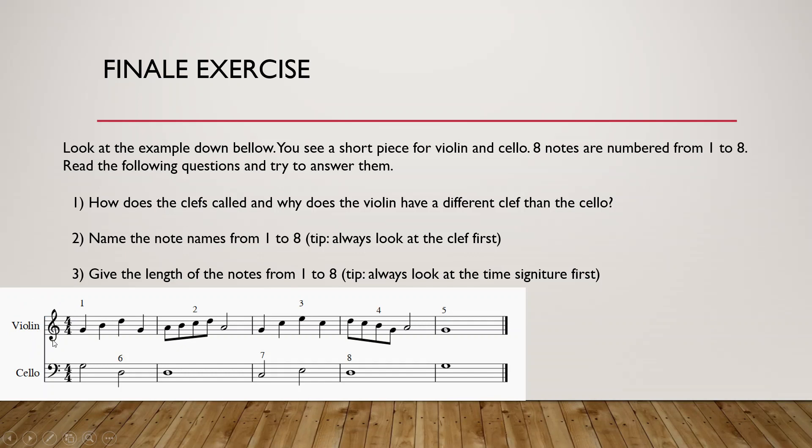So first, the clefs. The violin has a G clef, also referred to as the violin clef. And the cello has an F clef, also referred to as the bass clef. The reason why they have different clefs is because of the range of the instruments. The violin is much higher than the cello. So the cello has a clef for bass instruments — the F clef — and the violin has the G clef because it's much higher.